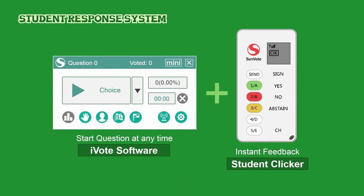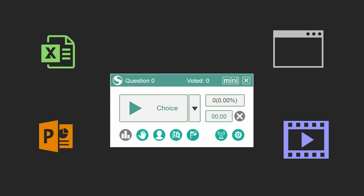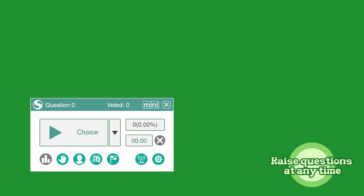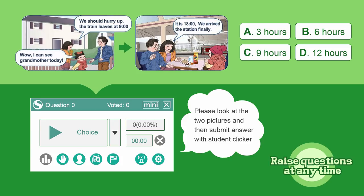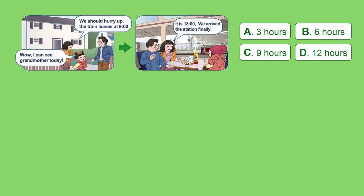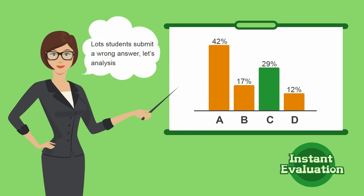Now with the mini floating window software and student clickers, the question can be edited by Word, PowerPoint, or Excel, or can be shown just by temporary page or video. The teacher can start a question at any time. Students use the clickers to answer, and the system compiles statistics automatically. The summary is clear at a glance.